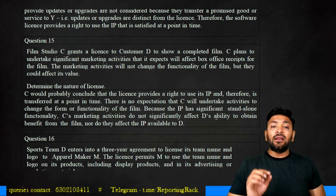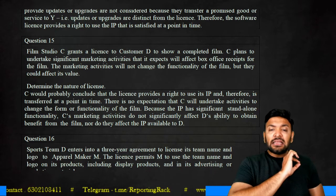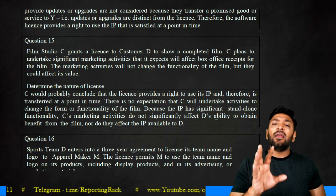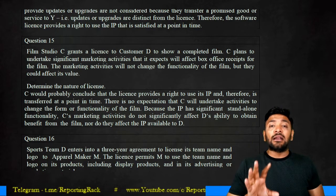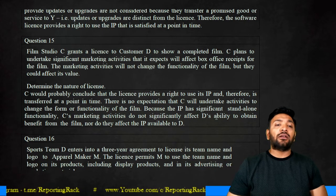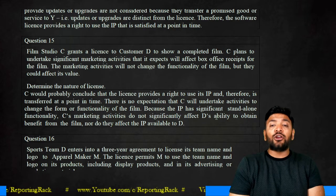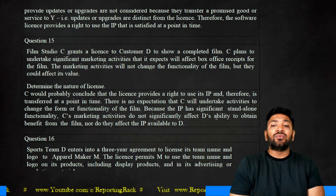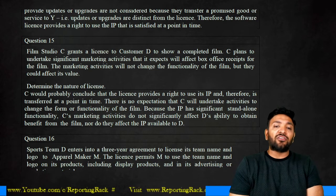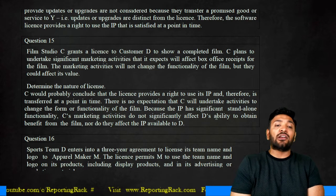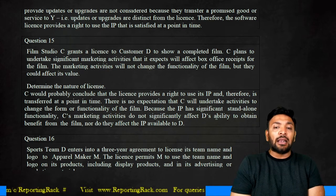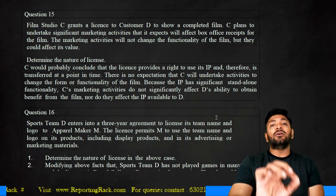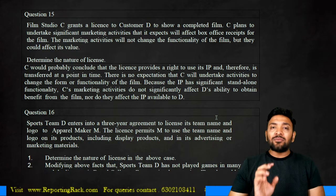In this case, the film has standalone functionality and C's activities do not significantly affect D's ability to obtain benefit. C concludes that the license provides a right to use the intellectual property, and therefore it is transferred at a point of time. There is no expectation that C will change the form or functionality of the film. C's marketing does not affect D's ability to obtain benefits, nor will it affect the intellectual property available to D. Therefore, the revenue should still be recognized at a point of time.